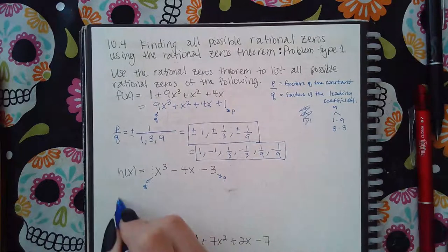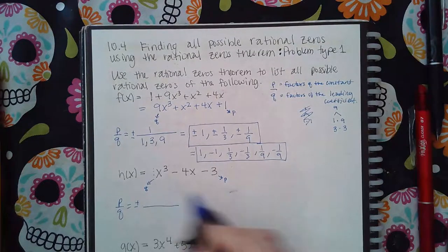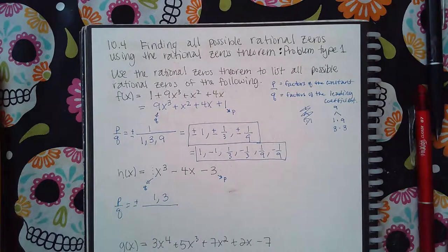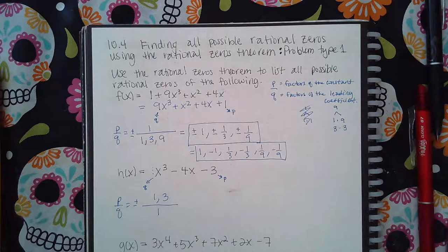So then for here, when I do the P over Q, I'm going to get plus or minus, and the factors of P are 1 and 3. Those are the only things that multiply to give us 3 is 1 and 3. And for Q, the only thing that multiplies to give us 1 is 1.